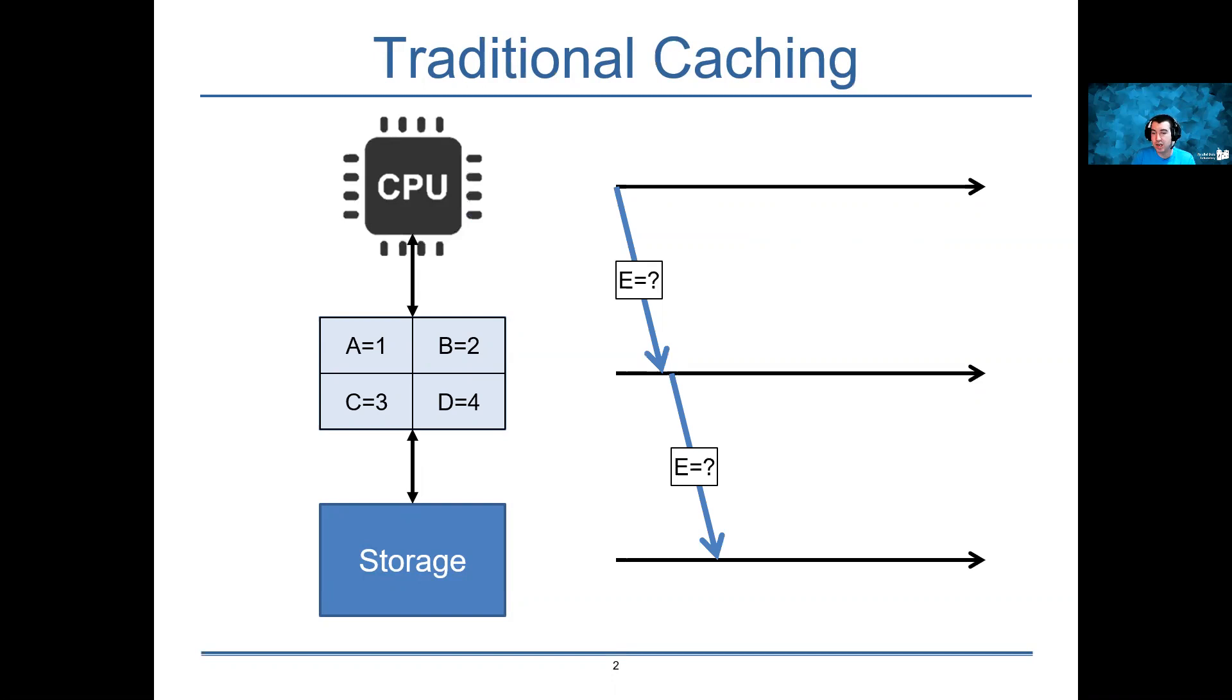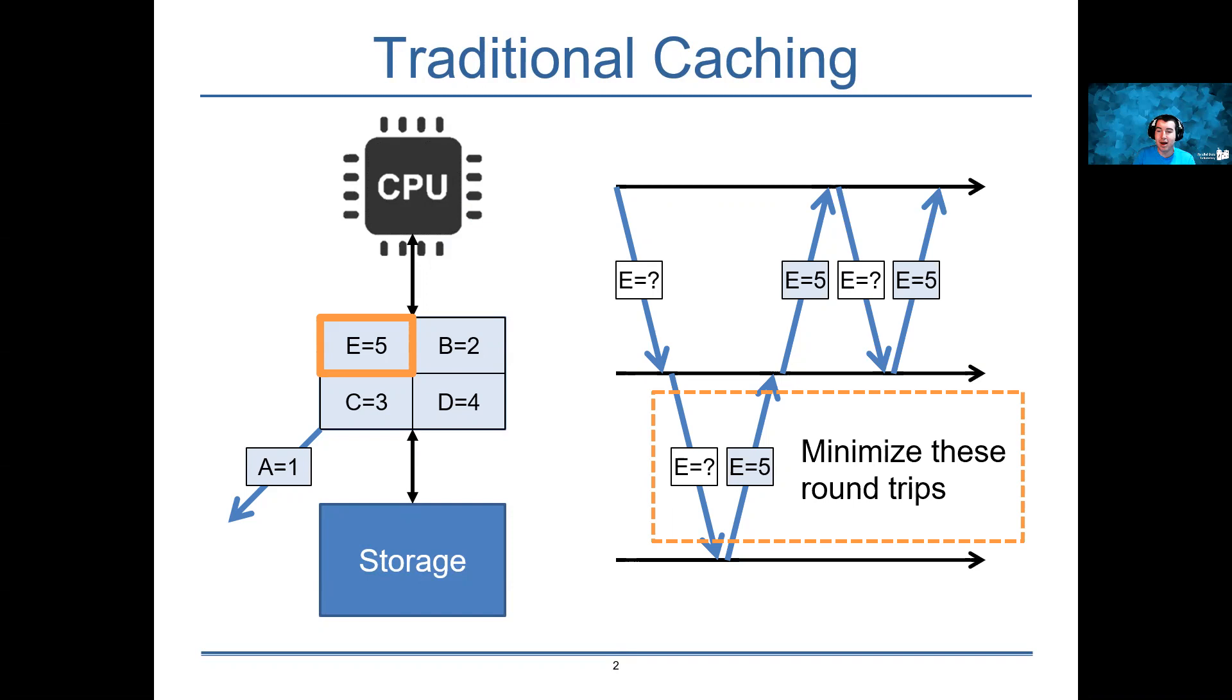The storage will fetch the data requested and send it back to the cache, whereupon the cache will bring the data item in and put it in the cache space, evicting another data item or multiple data items if necessary to make space. When this is done, it can return the data to the requester. The idea is that if there are future requests to this particular data item within a short enough amount of time, you don't have to take the trip to storage to get the data. By caching intelligently, we can minimize the number of round trips to storage and the costs associated with them.